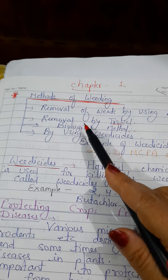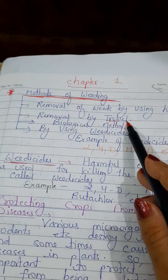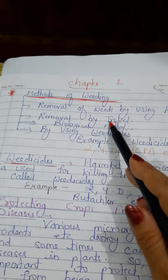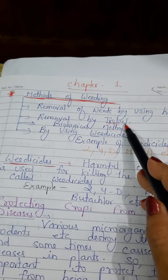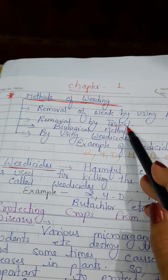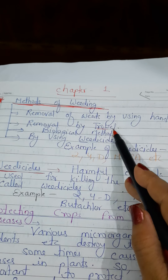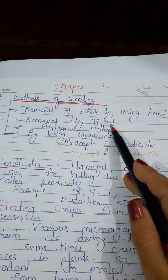Removal of weeds by using a trowel. I think you are familiar with the term kurpi — that is the trowel, an agricultural implement which is also used for removing weeds, that means unwanted plants.